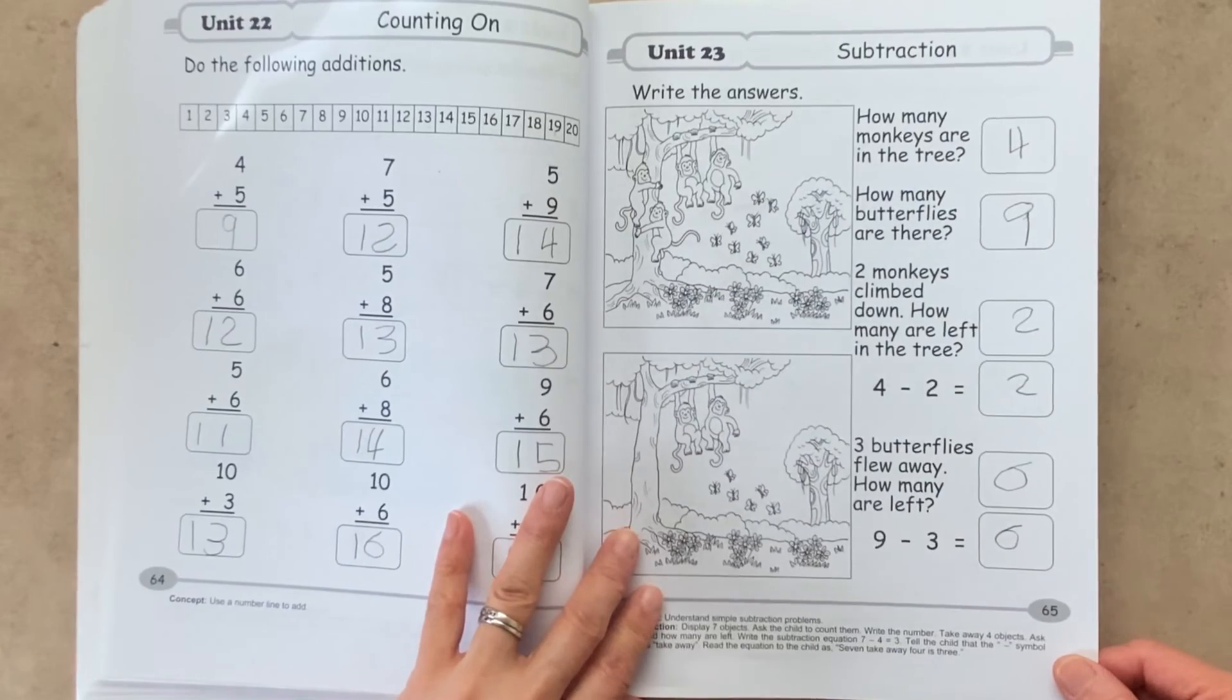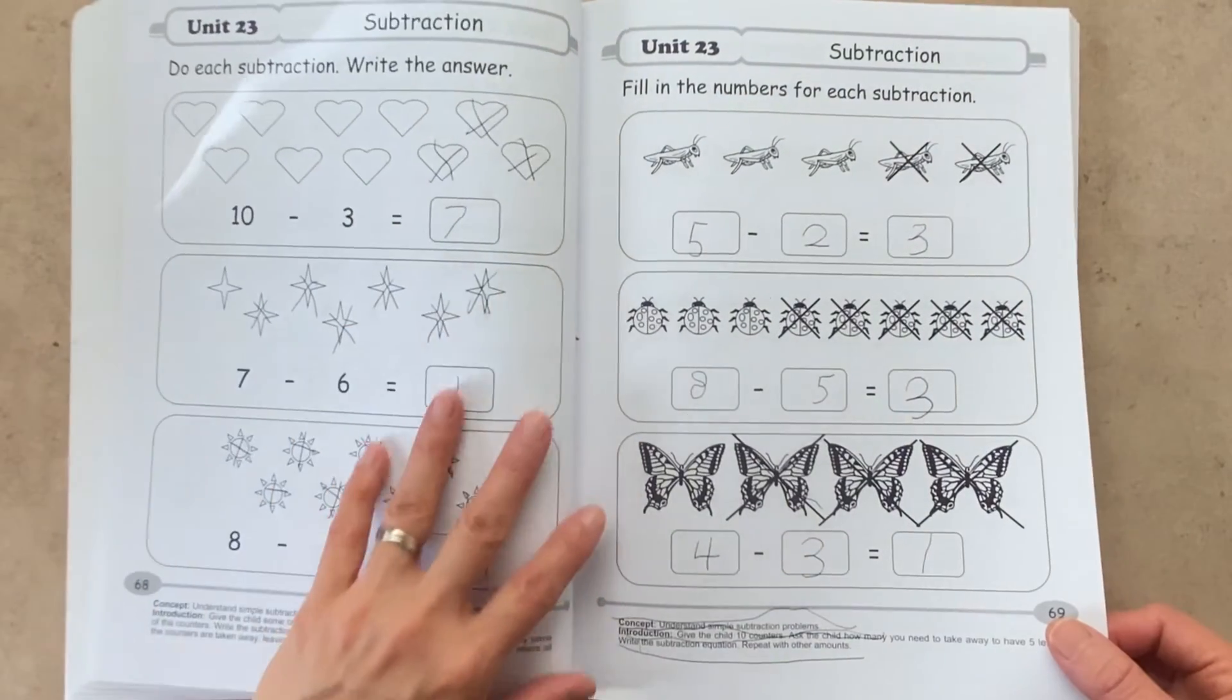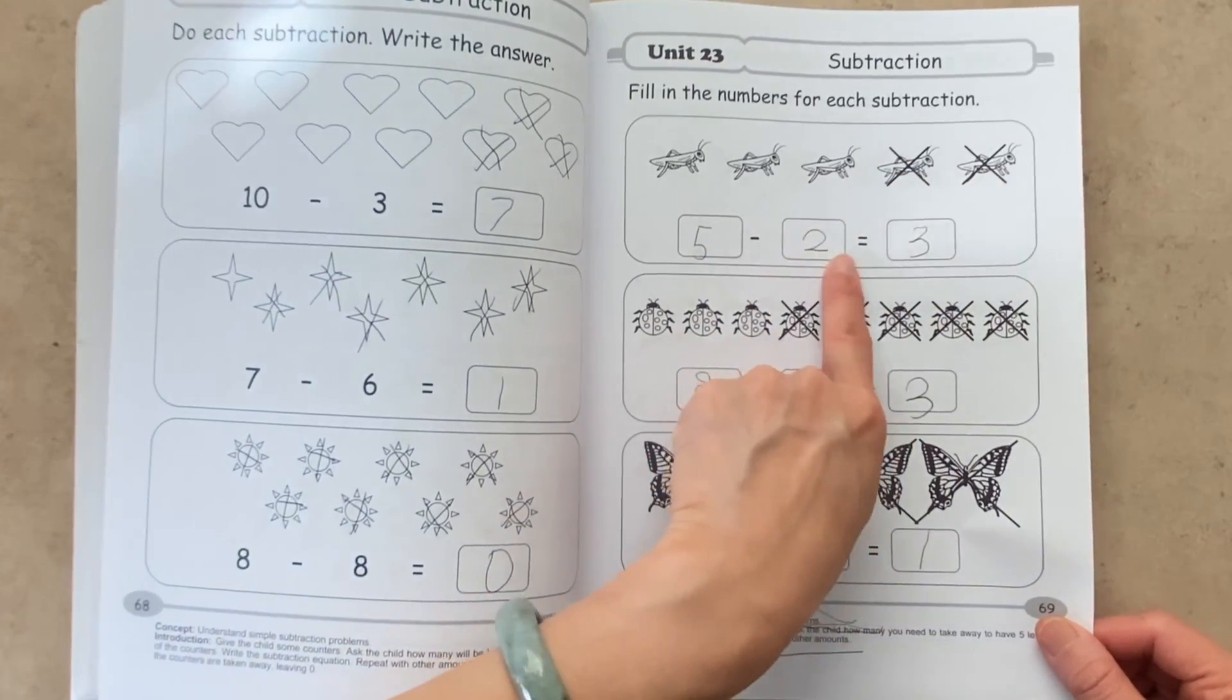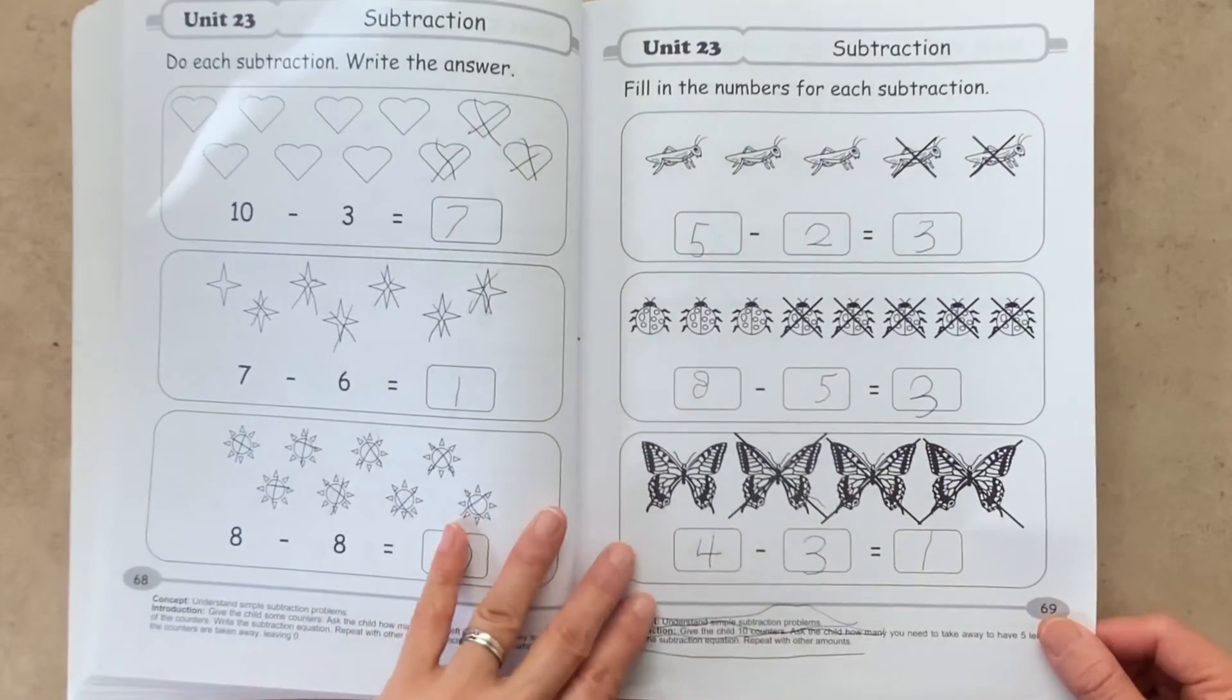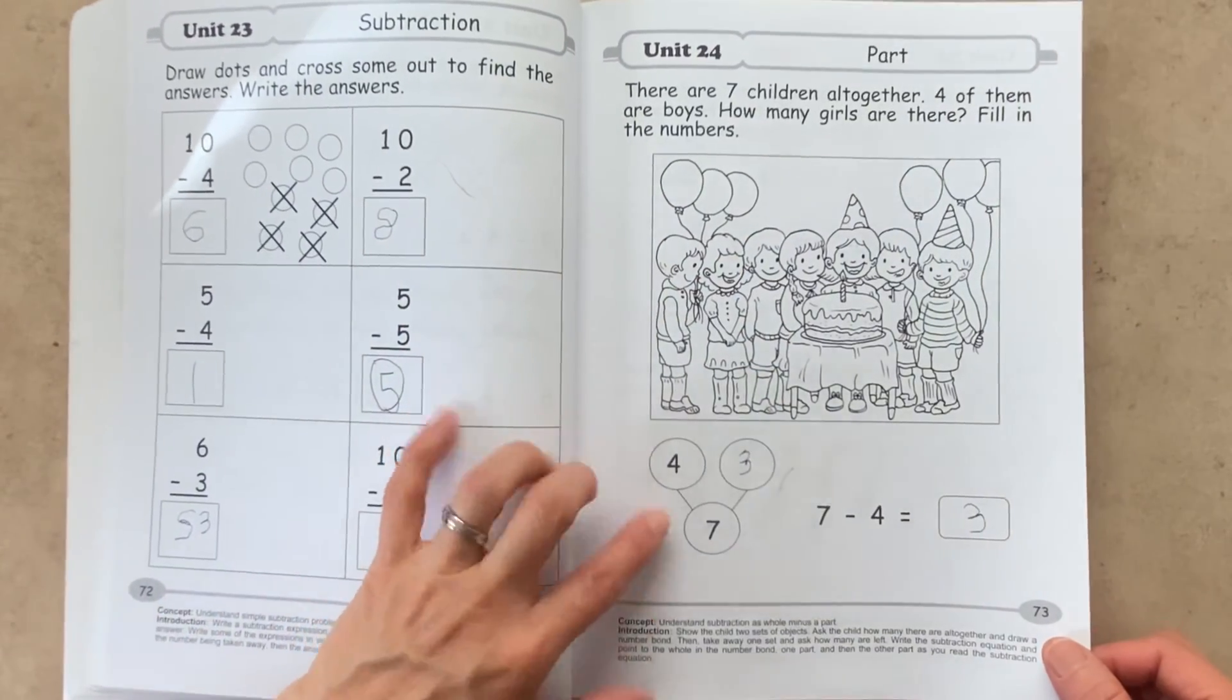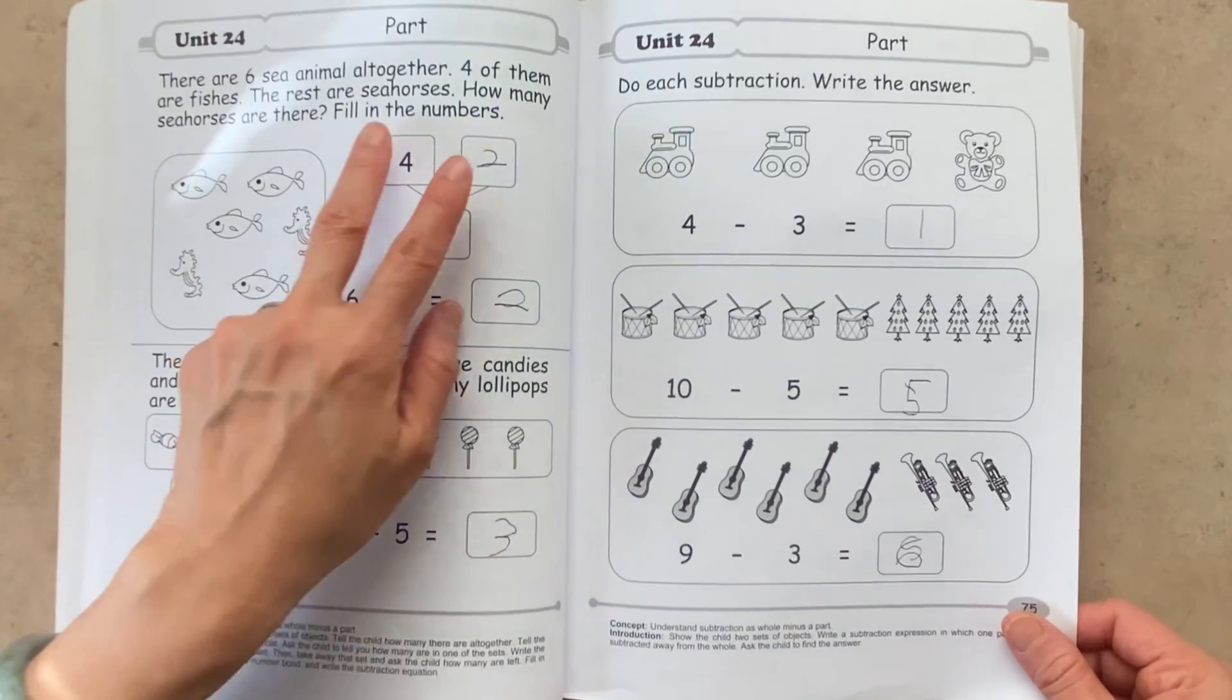Unit 23 is about subtraction. So here's some little word problems that the child can try to solve. There's more subtraction. So here you write down the total of grasshoppers and then how many are crossed out. So we have 2 crossed out. So we put 2 and then we figure it out. 5 minus 2 equals 3. You can clearly see that 3 are left over.